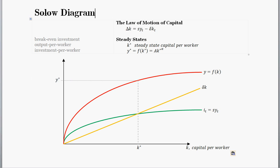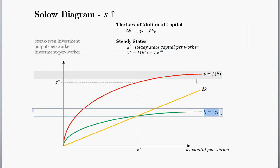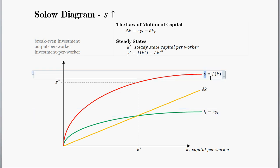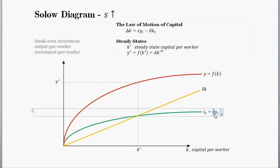What happens if we change savings? In particular, let's say the savings rate increases. Where does savings fit in? Savings fits into the investment line — this green line. The investment line is output per person times the savings rate. The savings rate is some number between zero and one — the percentage of income that the economy saves. This line is basically the output line but scaled by the savings rate. So if the savings rate increases, we're going to shift up this investment line.